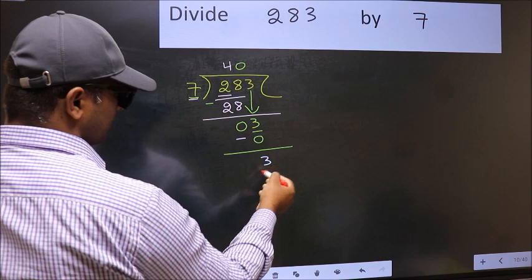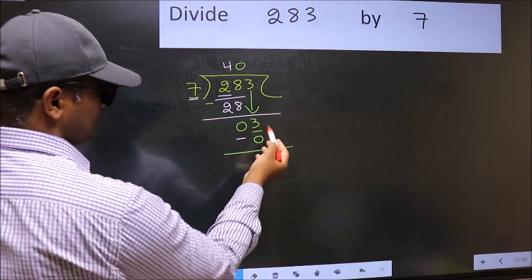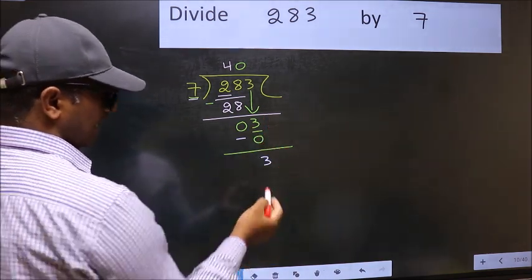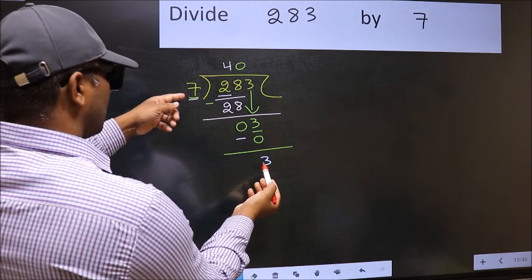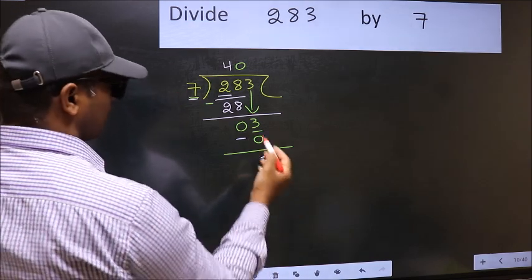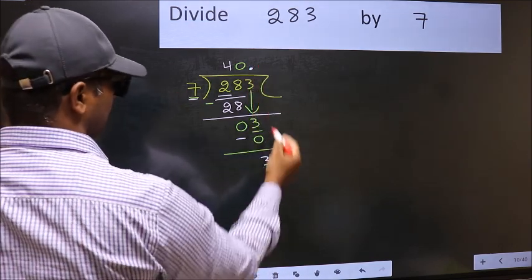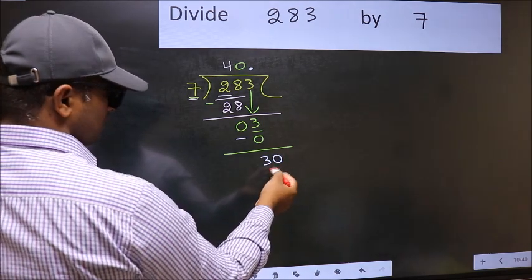Over here, we did not bring any number down, and 7 is smaller than 3. So now you can put dot and take 0. So, 30.